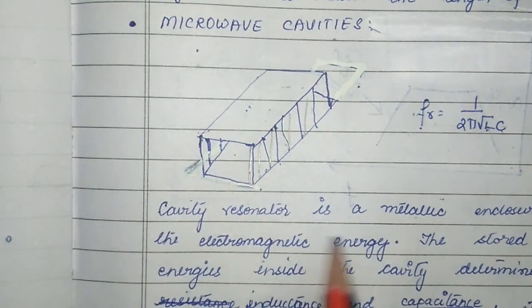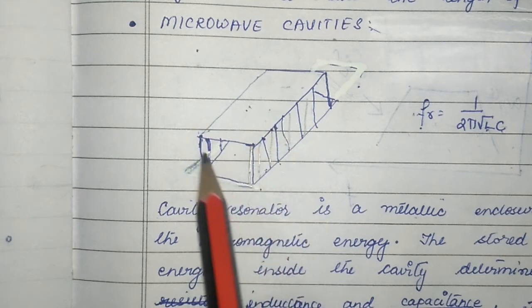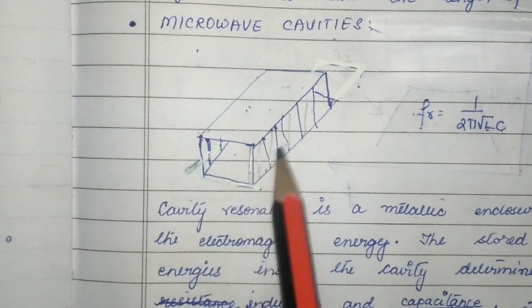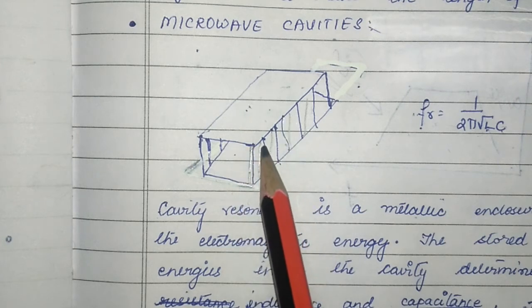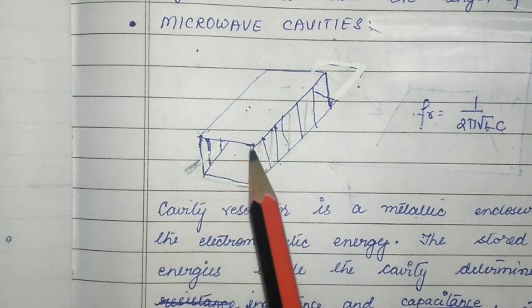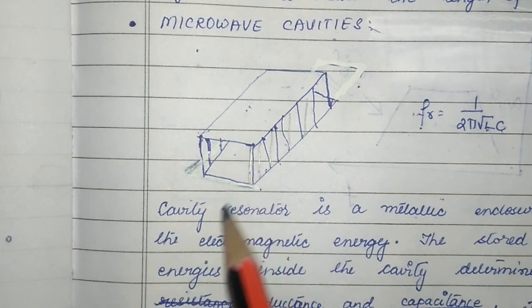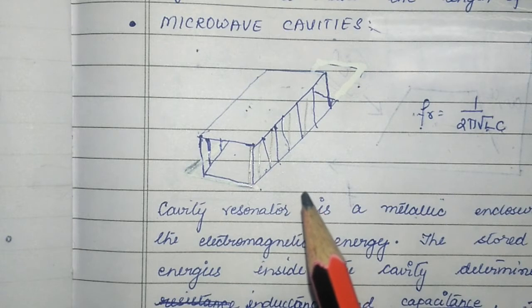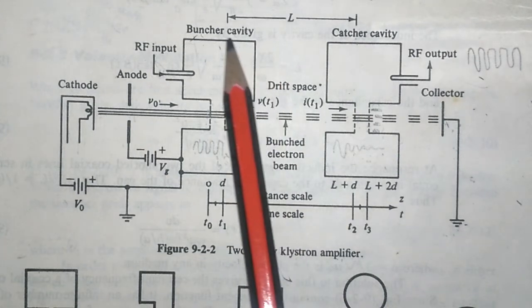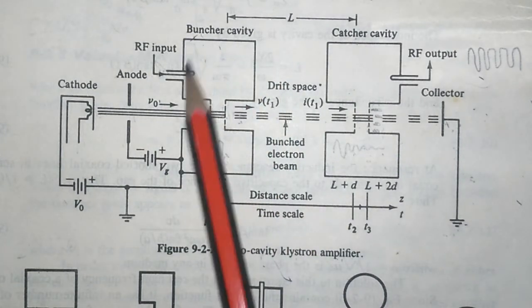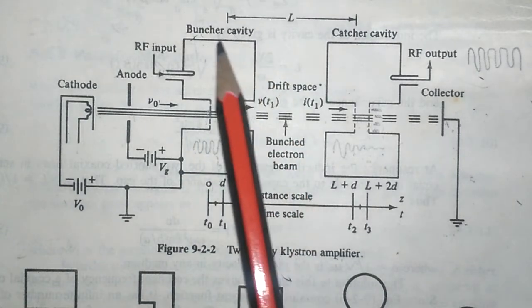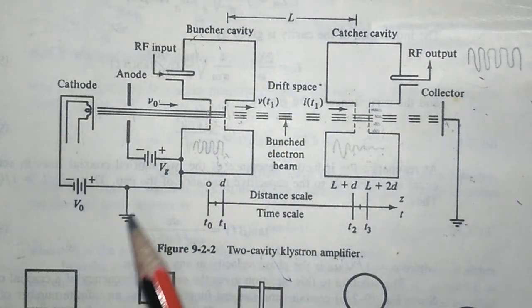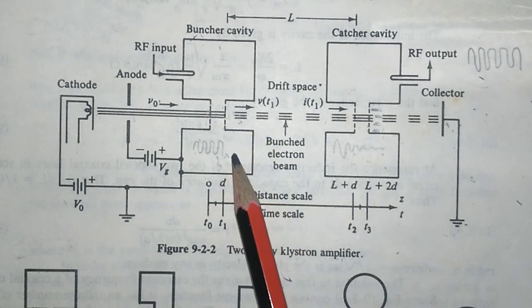The resonant cavity looks like an enclosed rectangular metallic enclosure. When excited, it generates damped oscillations. In the klystron, the cavity has a dumbbell-shaped cross section rather than a rectangular one — this is called a re-entrant cavity.